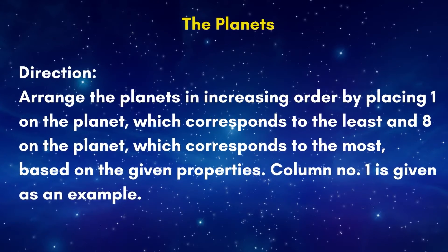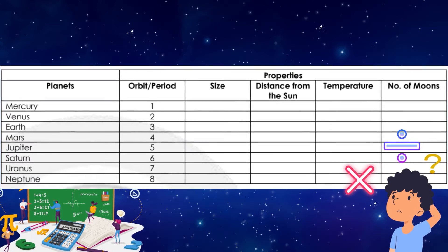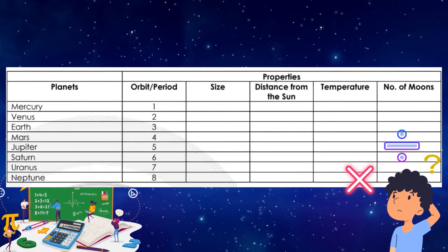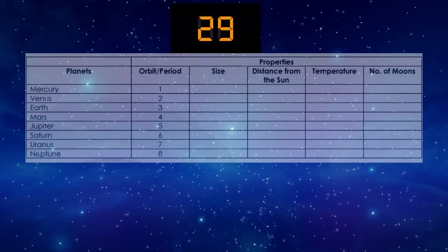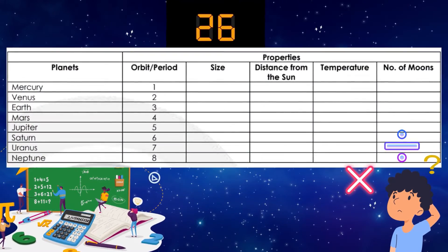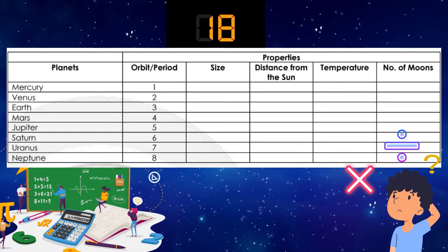We are ready for Learning Task 2. Arrange the planets in increasing order by placing 1 on the planet which corresponds to the least and 8 on the planet which corresponds to the most, based on the given properties. Column number 1 is given as an example. All you have to do is rank them from least to most. The first column — orbit or period from Mercury to Neptune — has been done for you. I'll give you enough time. You can refer to your Leaping Science Quarter 4, Week 6 for reference. Good luck, everyone!